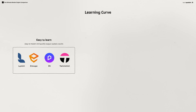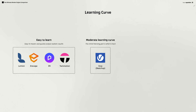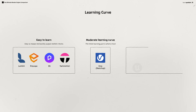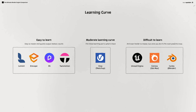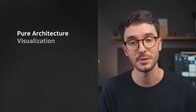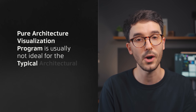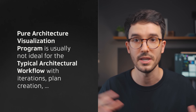I would group the engines this way: Lumion, Enscape, D5 and Twinmotion are easy to learn and easy to master, and you can get fairly decent results in no time. V-Ray is slightly to the side here with a slightly steeper learning curve and more complex UI, but also allows you more flexibility and complex results. And then you may go to Unreal Engine, Corona with 3ds Max and Cycles on Blender. They are much more advanced software that can get incredible results with a ton of realism, but demand much more skills and time invested to extract the best results. A pure architecture visualization program is usually not ideal for the typical architecture workflow with iterations, plan creation and so on.